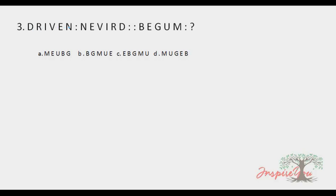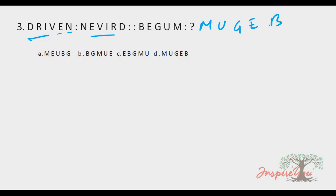Next question: D, R, I, V, E, N, colon, N, E, V, I, R, D, double colon, B, E, G, U, M, colon, question mark. The pattern here is that DRIVEN is simply reversed to give NEVIRD. Applying the same reversal to BEGUM gives M, U, Z, E, B — the word reversed.